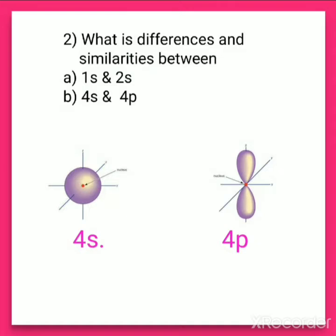Another difference is the shape: S has a spherical shape, and P has a dumbbell shape, so they also differ in shape. These are the differences and similarities for both pairs. Please note the questions and answers. Thank you everyone.